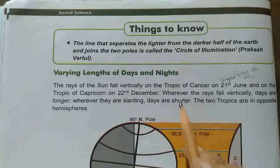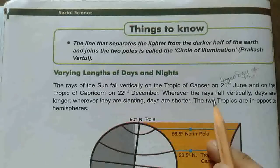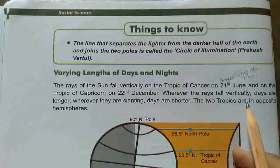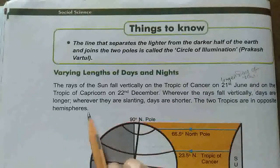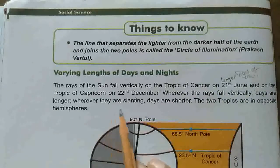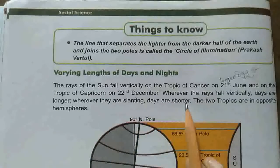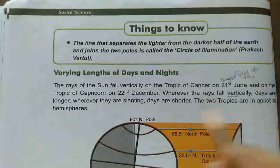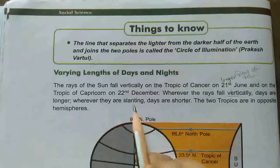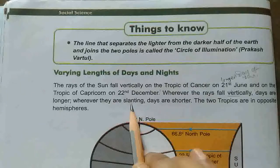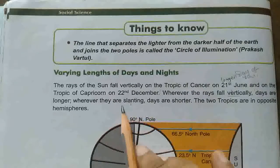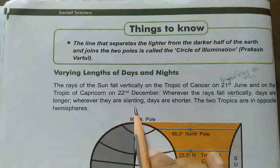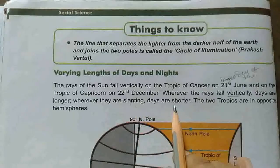How does that happen? Wherever the rays fall vertically, days are longer. Wherever they are slanting, days are shorter. If the rays fall vertically, then days are longer. And when they fall in a slanting manner, it should be shorter.